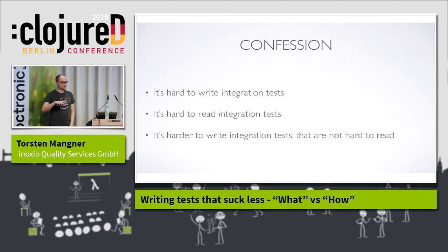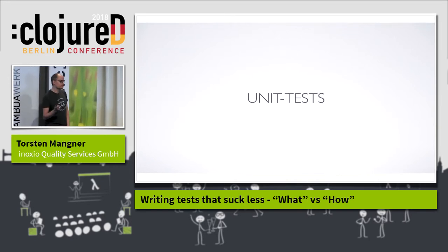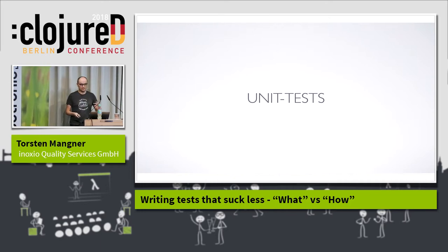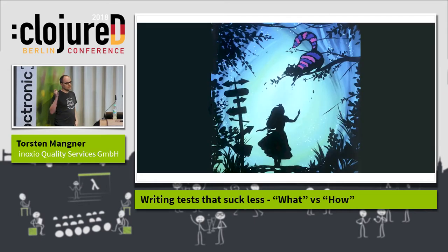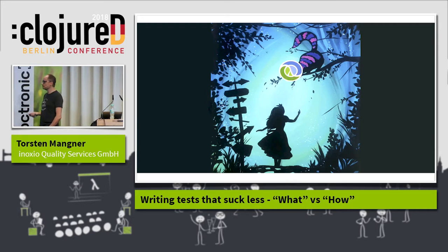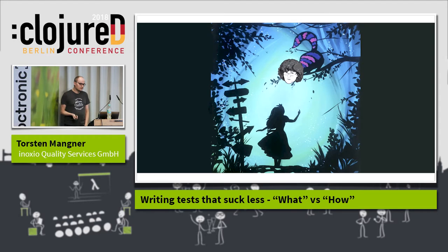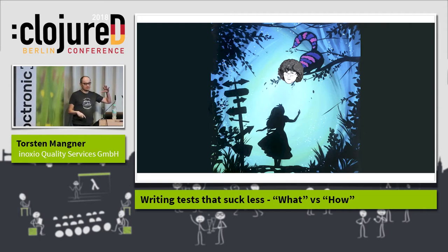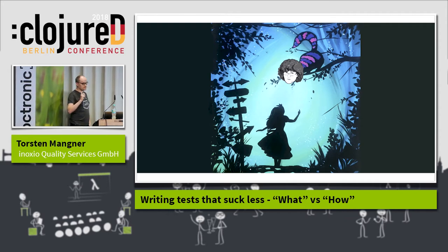Hard compared to what? Hard compared to unit tests, obviously. Unit tests are simple, elegant, beautiful. They're easy to write, easy to read. We're living in the wonderful land of functional programming, and I thank God for giving us Clojure — and by God, I mean Rich Hickey. What could be easier than writing a unit test for a pure function? It's just arguments, a result, and a simple validation. Input, execution, assertion. Simple.